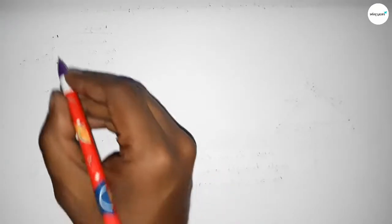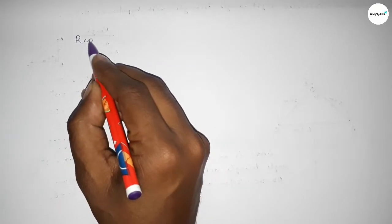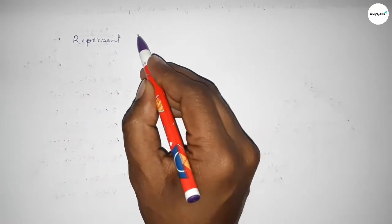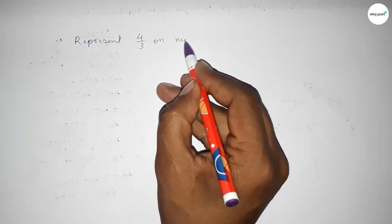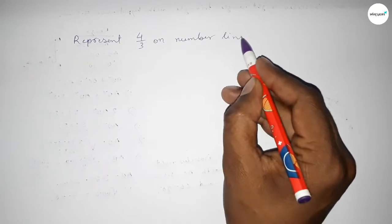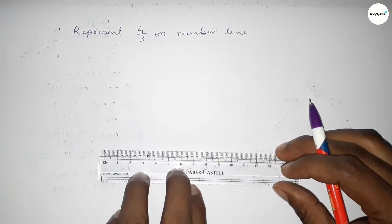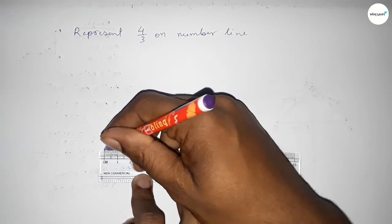Hi everyone, welcome to SI Share Classes. Today in this video we have to represent 4 over 3 on number line. So let's start the video. First of all, we have to draw here the number line, so first drawing here a line of any length and mark the ends with arrows.